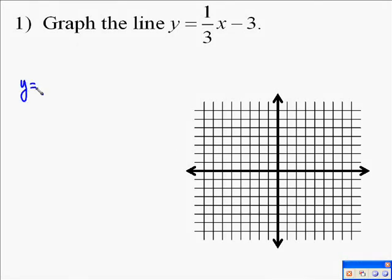The following video asks us to graph the line y equals 1 third x minus 3. To do this, we're going to use the slope-intercept form of a line, which is y equals mx plus b, where m is the slope and b is the y-intercept. So in this case, the slope is 1 third and the y-intercept is negative 3.